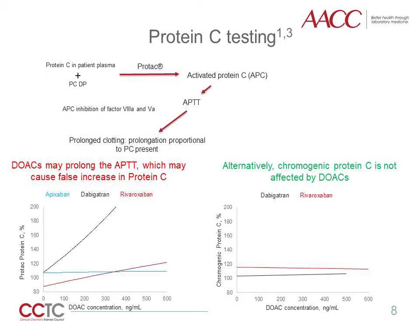Clot-based protein C assays use a snake venom, PROTAC, from the copperhead snake Agkistrodon contortrix. PROTAC will activate the protein C in the plasma, creating activated protein C, which inhibits activated factors V and VIII. As activated V and VIII are inhibited, the clotting time is prolonged, proportional to the amount of protein C present in the plasma. Protein C-deficient plasma is added to the test sample to isolate clot-time prolongation due only to protein C. However, DOACs may increase the APTT clotting time, thus falsely elevating protein C results. There is a variable DOAC dose-dependent effect on clot-based protein C methods, resulting in factitiously elevated protein C levels. Alternatively, chromogenic protein C methods are not affected by either class of DOACs, as demonstrated with no effect of either dabigatran or rivaroxaban on chromogenic protein C results.